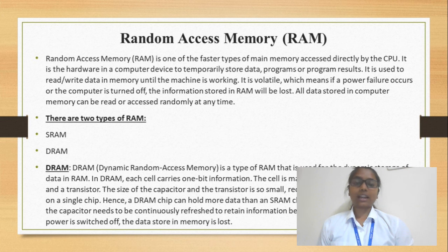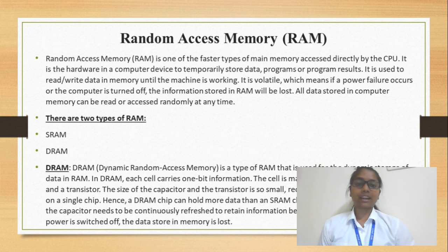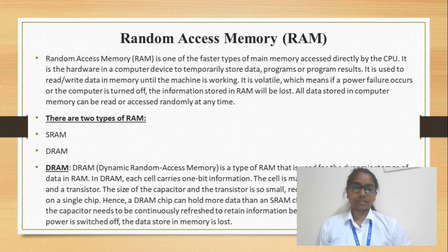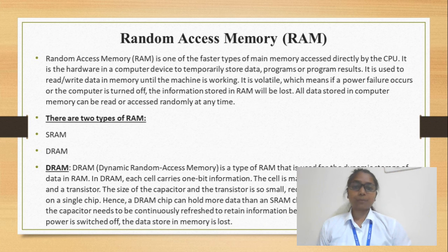RAM is of two types: DRAM and SRAM. DRAM stands for Dynamic Random Access Memory. DRAM is a volatile memory that stores temporary data. It stores bits of information, where each cell consists of one bit — made up of a transistor and a capacitor. We need to refresh the DRAM periodically.